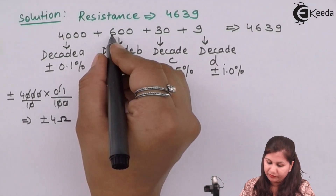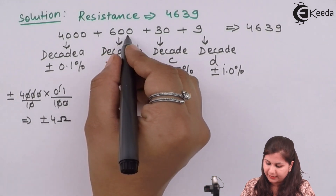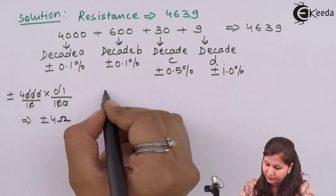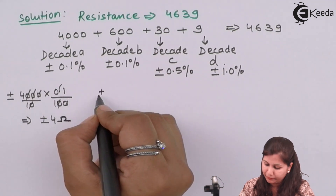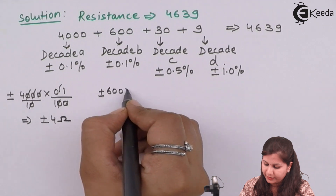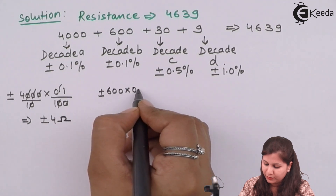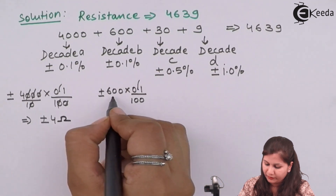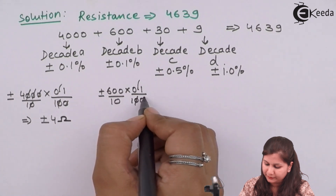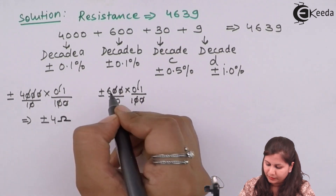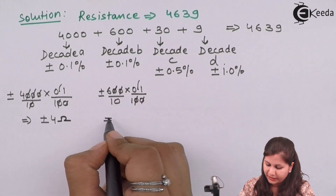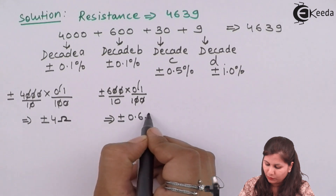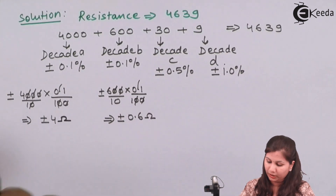For decade B, the reading is 600 and the error is ±0.1%, so: 600 × 0.1/100 = ±0.6 ohms.